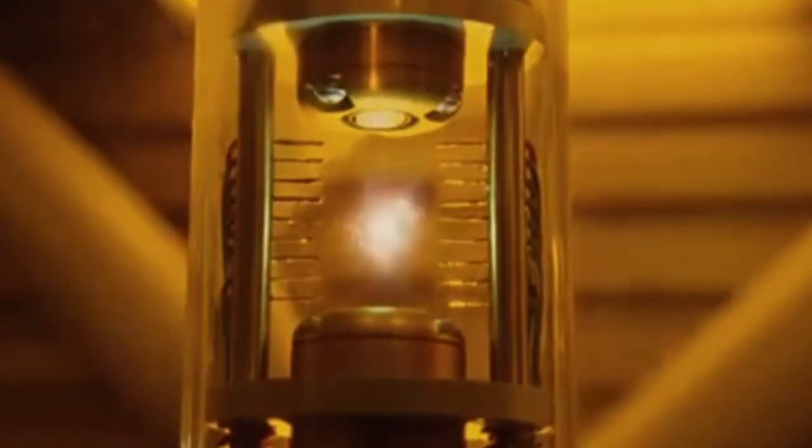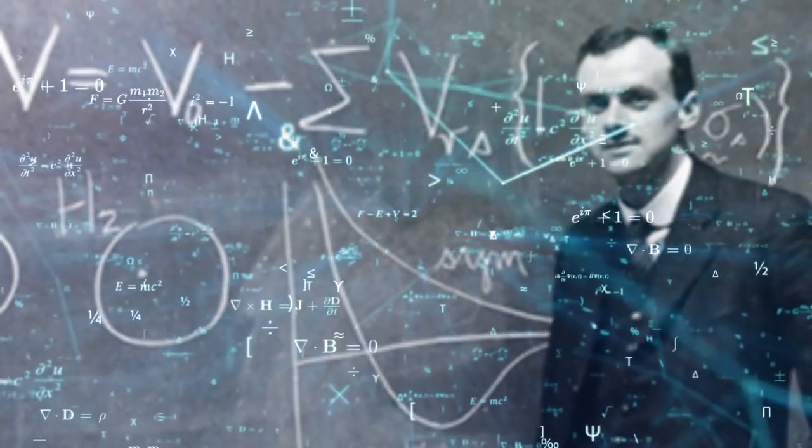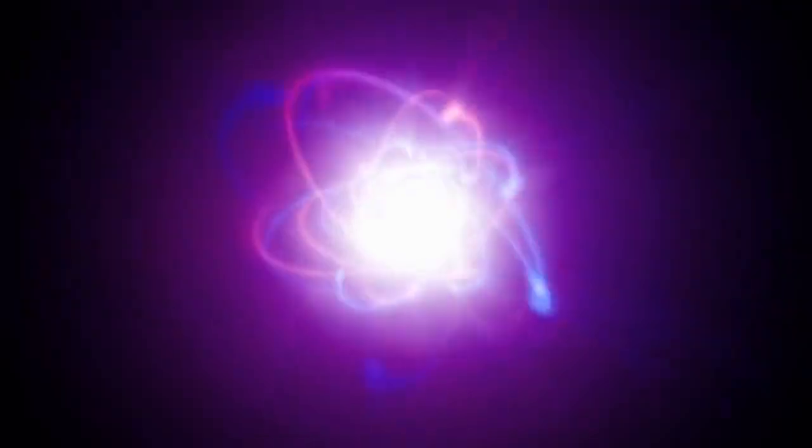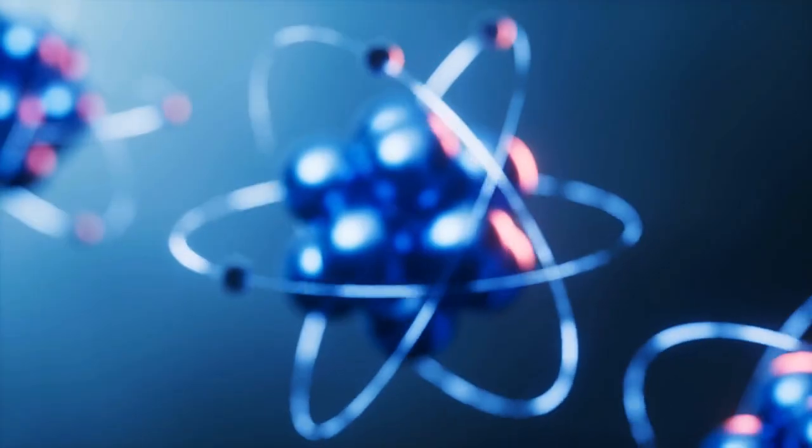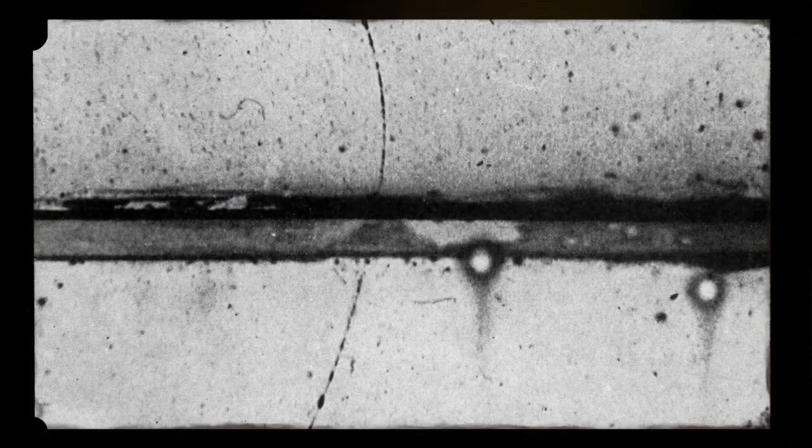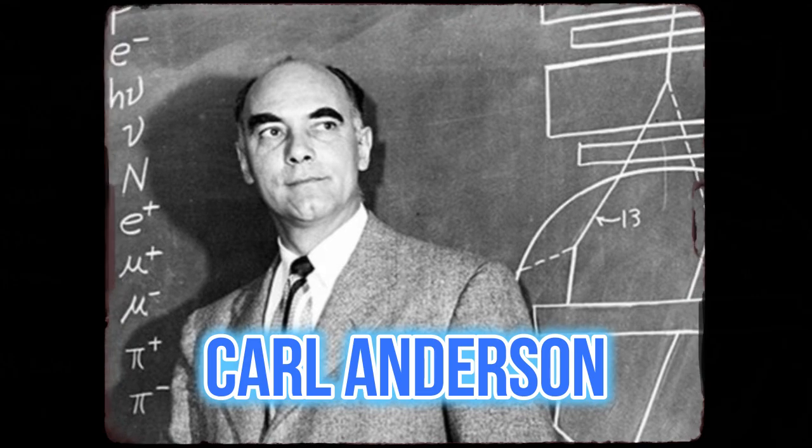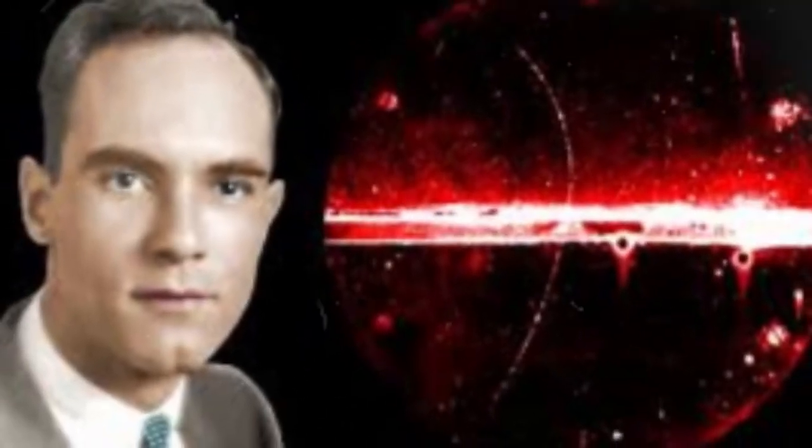The existence of antimatter was first proposed by physicist Paul Dirac in 1928. Dirac's equations, which combined quantum mechanics and special relativity, predicted the existence of particles with the same mass as electrons but with opposite charge. These particles were later discovered and named positrons. In 1932, Carl Anderson, an American physicist, experimentally confirmed the existence of positrons while studying cosmic rays.